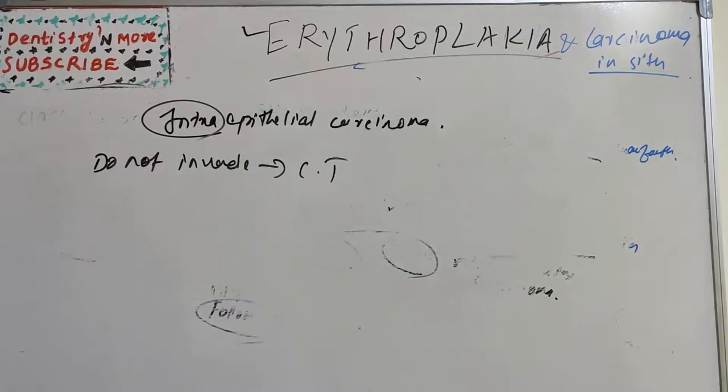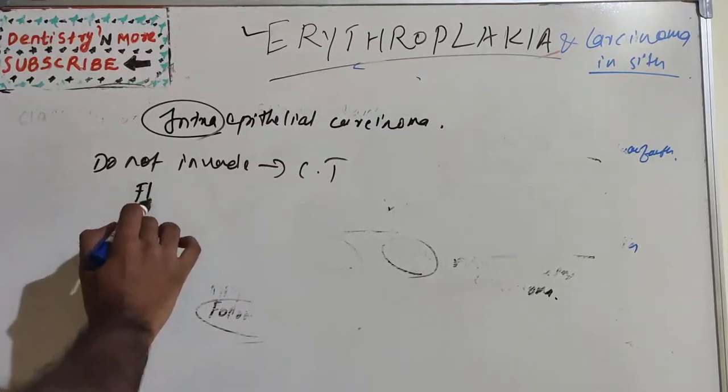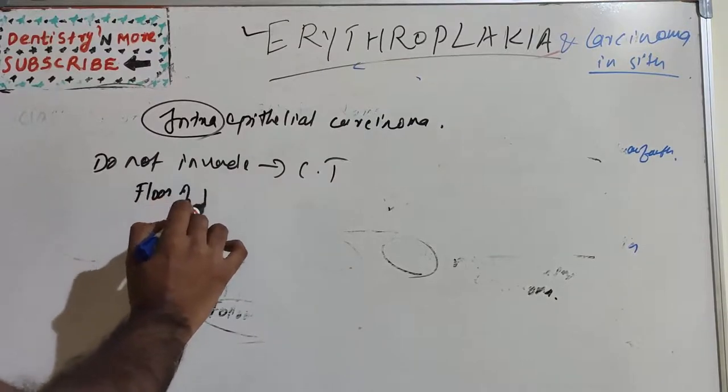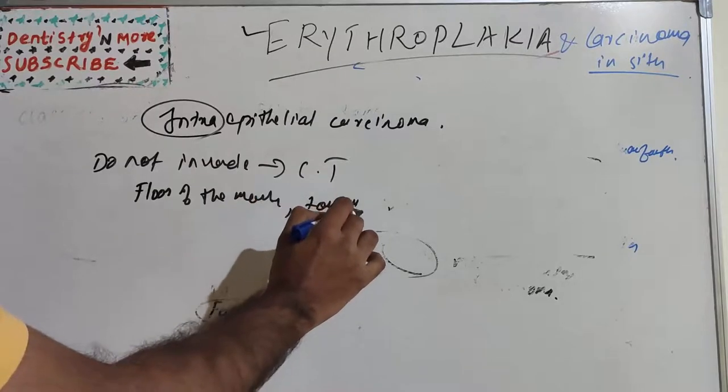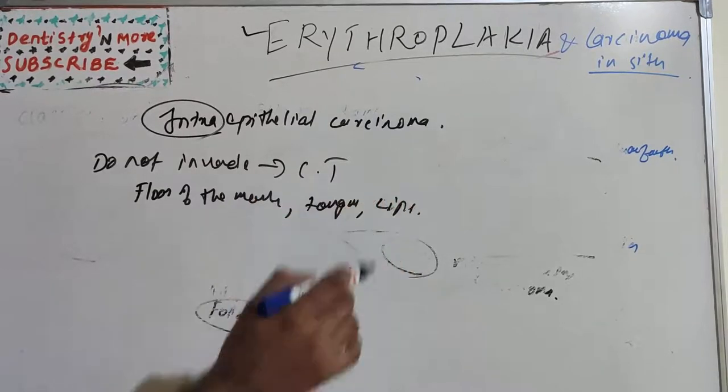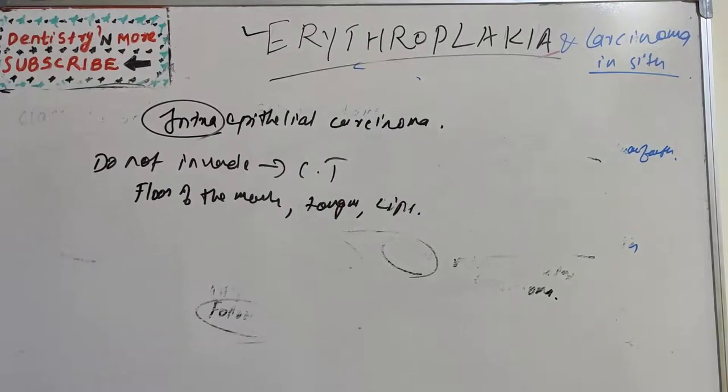It's common among elderly with male predilection, which presents as white plaque or ulcerated or reddened areas. The most common sites are floor of the mouth, tongue, and lips. It has combined features of leukoplakia and erythroplakia.